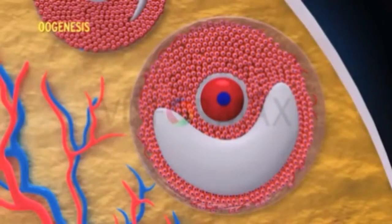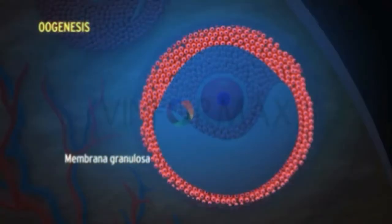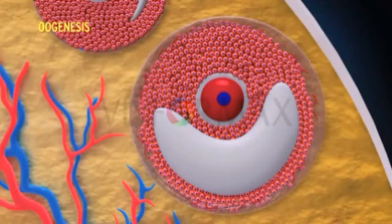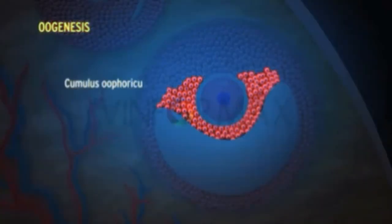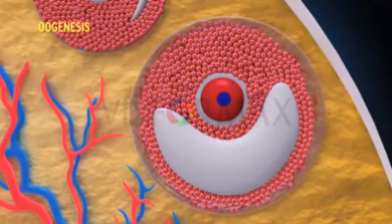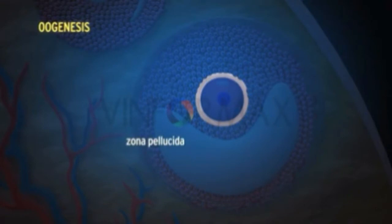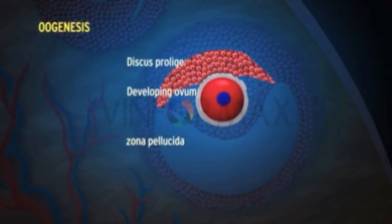The follicular cells that form the outer layer are called membrana granulosa. The follicular cells that intervene between the antrum folliculi and zona pellucida are known as cumulus oophoricus or cumulus ovaricus. Those follicular cells that suspend the zona pellucida and developing ovum constitute the discus proligerus.